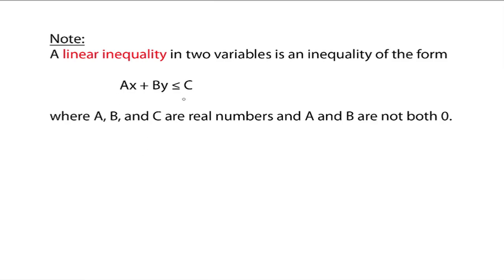What this really means is A, B, and C are any real numbers. But A and B cannot both be zero. One of them can be zero, that's fine, but not both A and B, because then everything would go away — you wouldn't have your two variables X and Y.